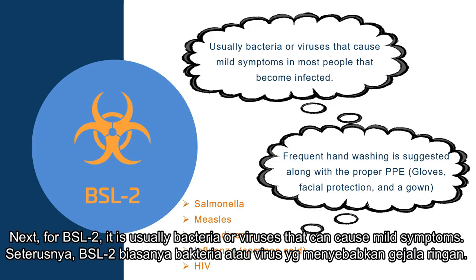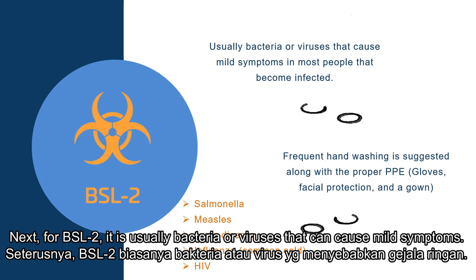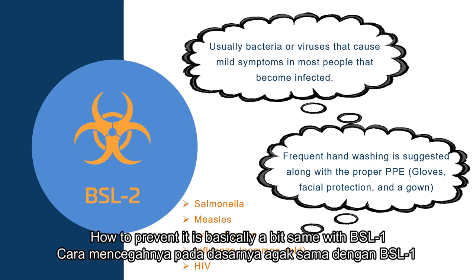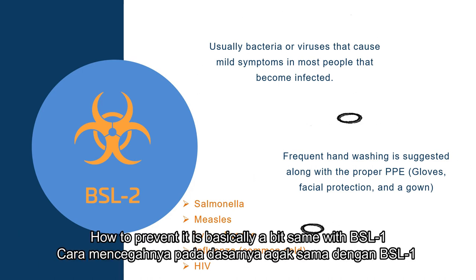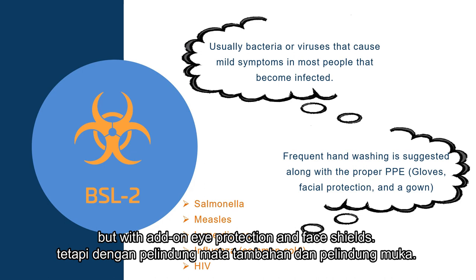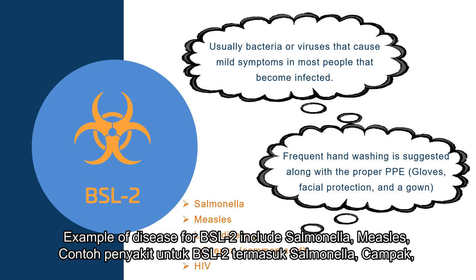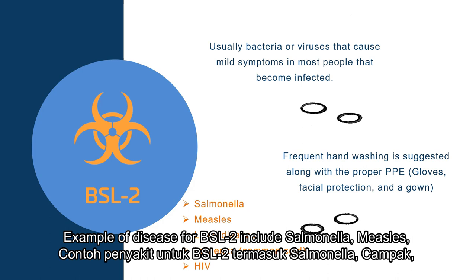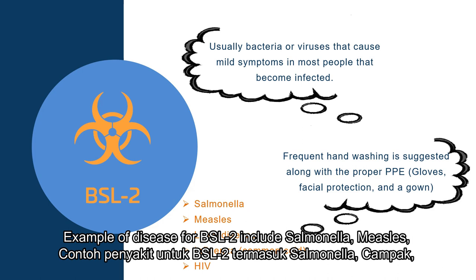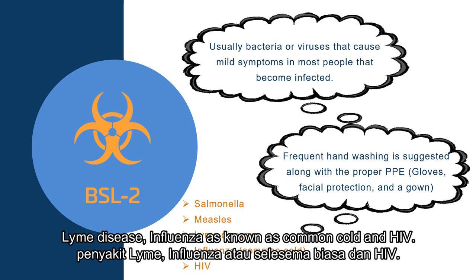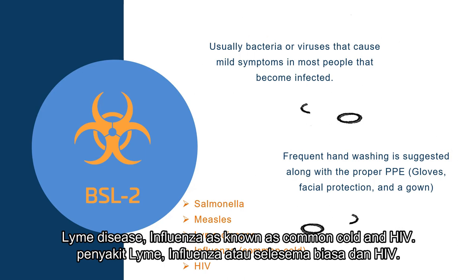For BSL-2, it usually involves bacteria or viruses that can cause mild symptoms. Prevention is basically similar to BSL-1 but with the addition of eye protection and face shield. Examples of diseases for BSL-2 include Salmonella, measles, Lyme disease, influenza, also known as the common cold, and HIV.